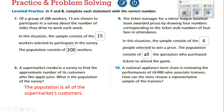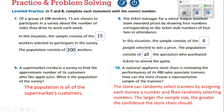A national appliance store chain is reviewing the performance of its 400 sales associate trainees. How can a store choose a representative sample of the trainees? A store can randomly select trainees by assigning each trainee a number and then randomly selecting the number. The larger the sample size, the greater the confidence the store chain should have.